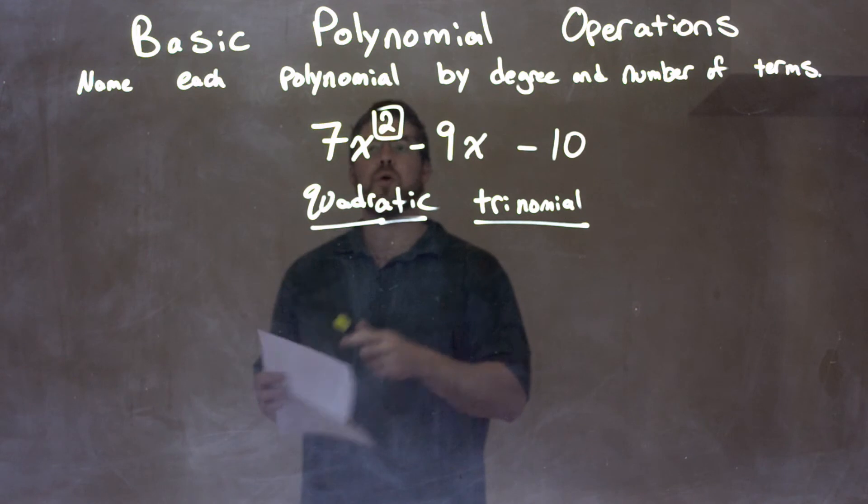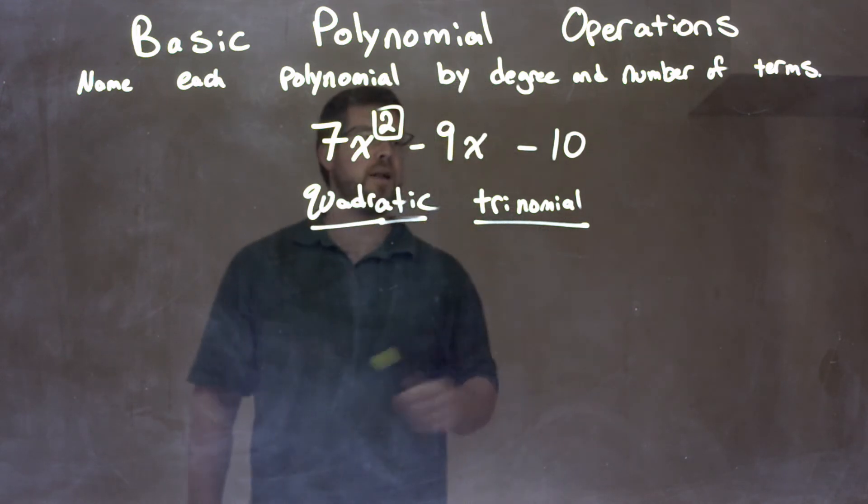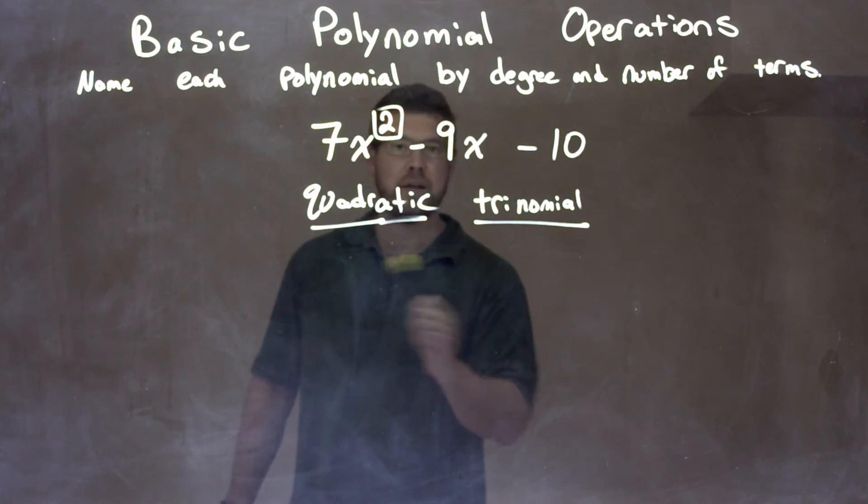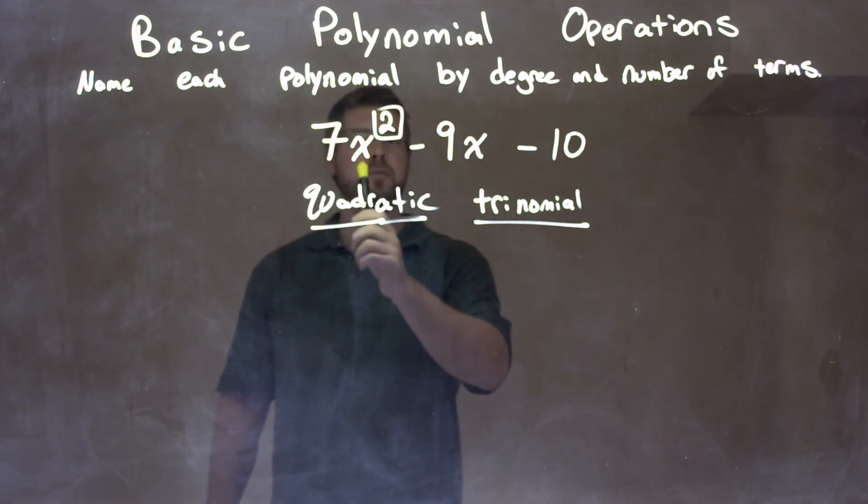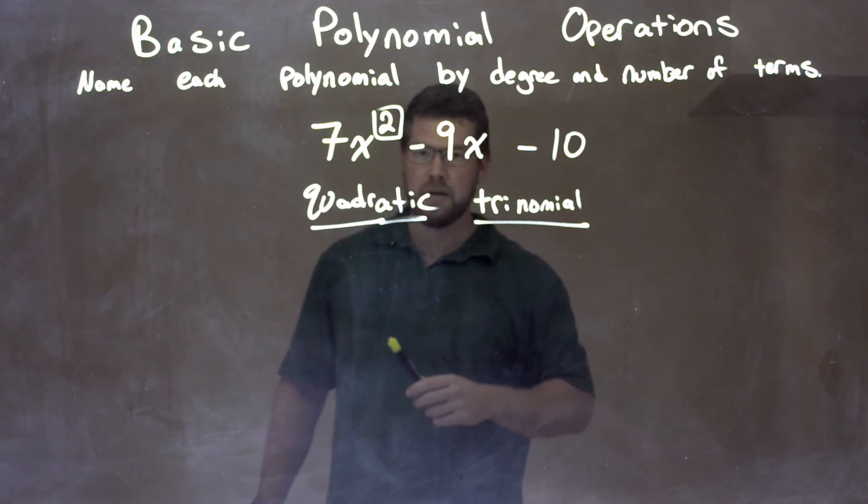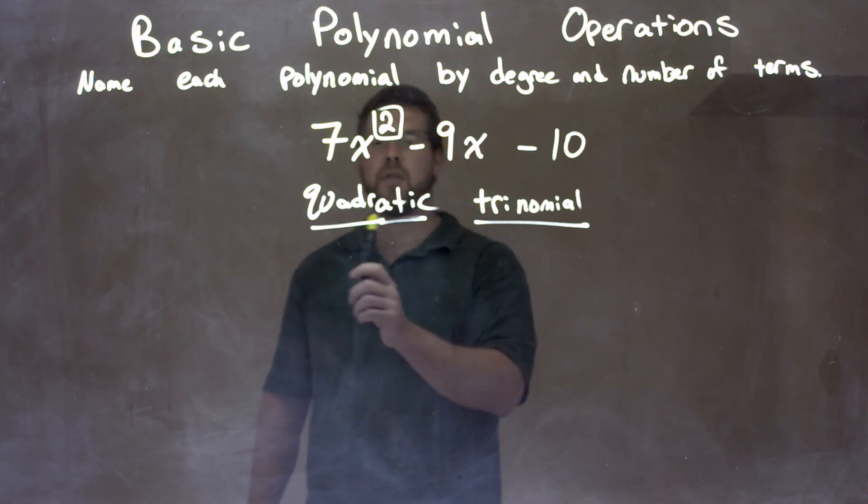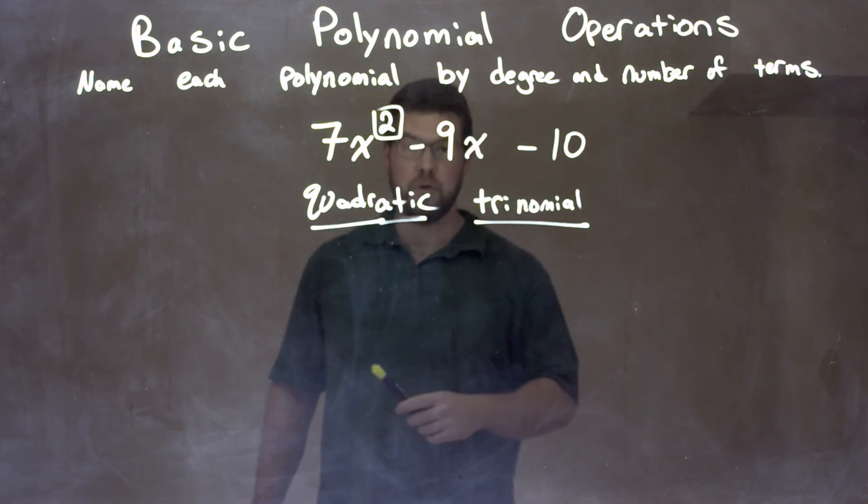So let's recap. We're given 7x squared minus 9x minus 10. Highest degree is the second power, that's a quadratic. Then from there, we have 3 terms: 1, 2, and 3. We call that a trinomial. Bring both of these together, and we call that a quadratic trinomial.